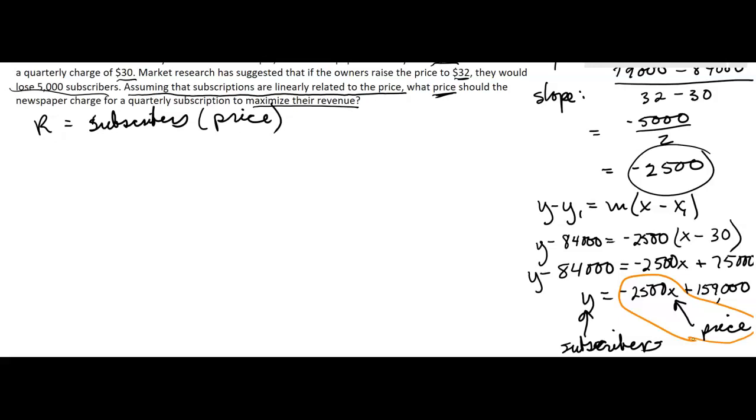So now we can say the revenue based on the price is going to equal the number of subscribers. Well, what's the number of subscribers? It's the y, so it's this part right here. That's negative 2,500x plus 159,000 times the price, and the price is x.